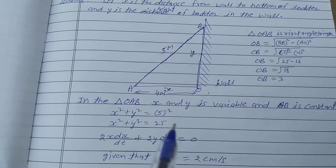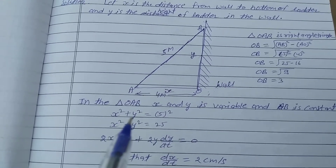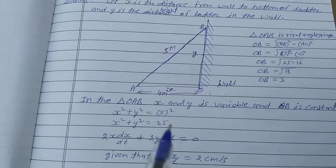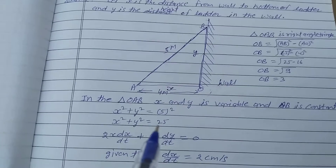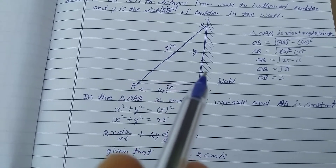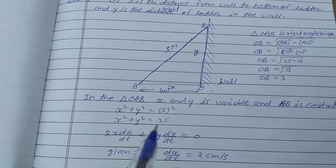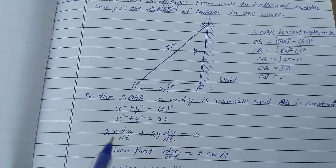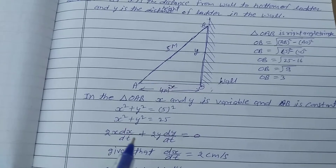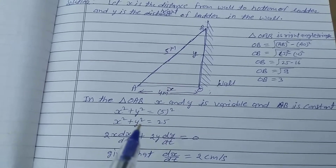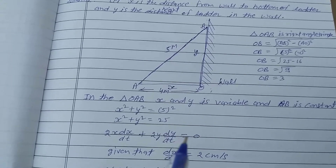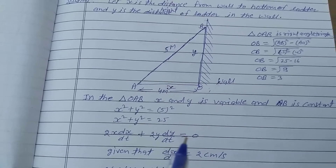Apply the Pythagoras theorem: x² + y² = 5² = 25. Here both x and y are variables with respect to time, so differentiate with respect to t: 2x(dx/dt) + 2y(dy/dt) = 0, because the differentiation of 25 is 0.